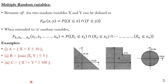We will restrict ourselves to two random variables x and y. The bivariate cumulative distribution function (CDF) for two random variables x and y is defined as F_xy(x, y) = probability of (X ≤ x) intersection with (Y ≤ y).